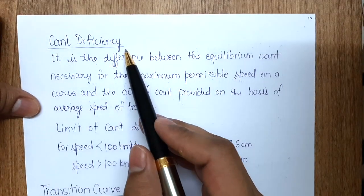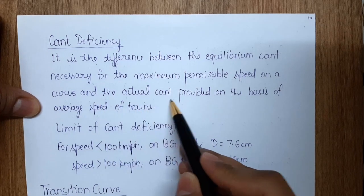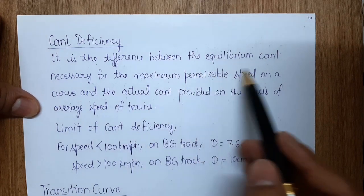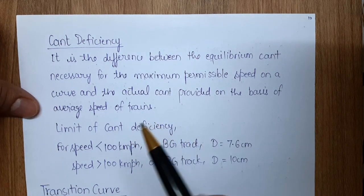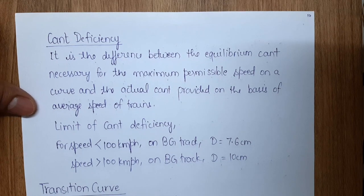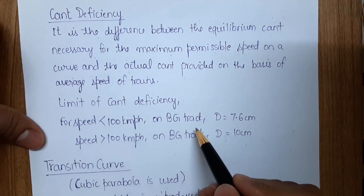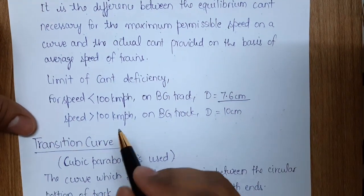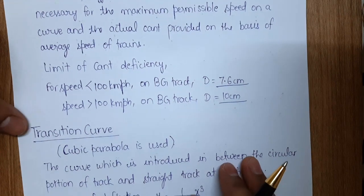Cant deficiency is the difference between the equilibrium cant required for the maximum permissible speed and the actual cant provided based on average train speed. For speed less than 100 kmph on broad gauge track, maximum cant deficiency is 7.6 cm. For speed more than 100 kmph, it is 10 cm. These values are based on questions asked in previous Engineering Services and GATE examinations.